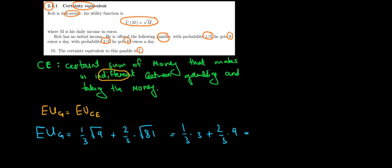Now let's do some math over here. 3 and 3 cancel out. We have only 1 left from here. 3 and 9 cancel out, so we have 3 from there. 1 plus 2 times 3 is 6. So the expected utility is 7.